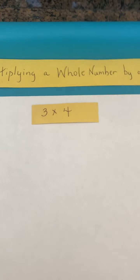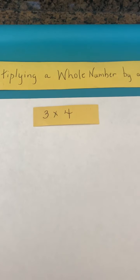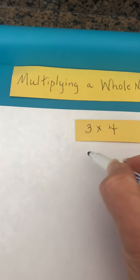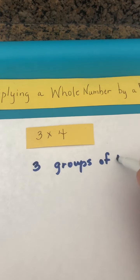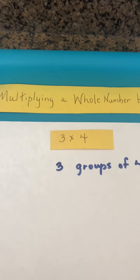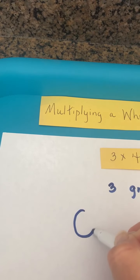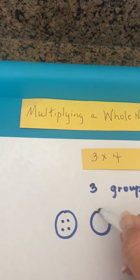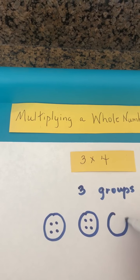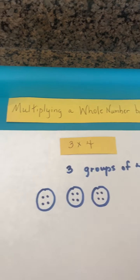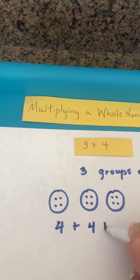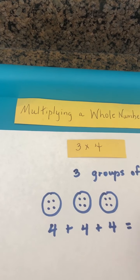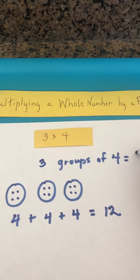Let's take a look at our example from our multiplication facts of three times four. Basically this refers to three groups of four. If we think of that, we have a group of four, another group of four, another group of four, which would be four plus four plus four, which gives us a sum of 12. So three groups of four would be equivalent to 12.